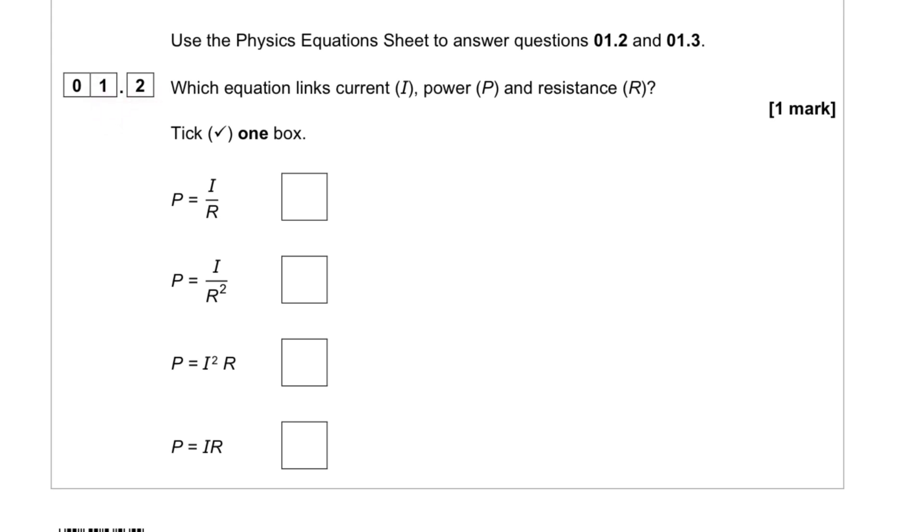For question 1.2, we need to tick which is the equation that links power, resistance and current. Well, we know that power is current times voltage. And we know that voltage is equal to current times resistor from Ohm's law. And if we replace the voltage into there, we can write power to be current times the current times resistance. And that would be current squared times the resistance.